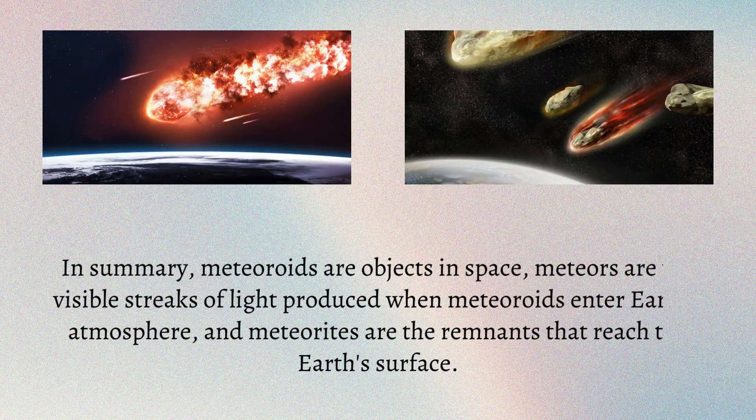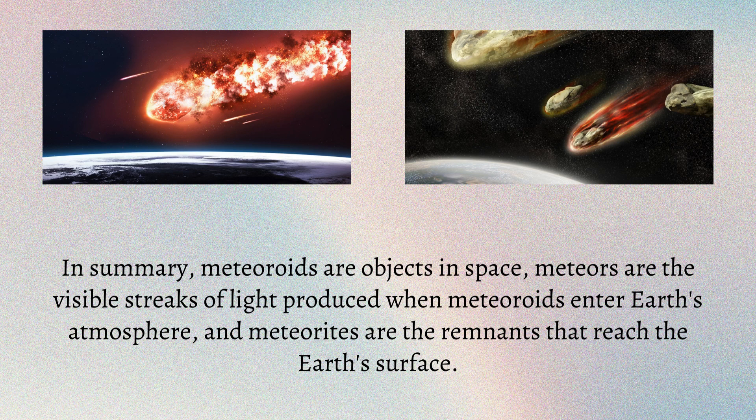In summary, meteoroids are objects in space, meteors are the visible streaks of light produced when meteoroids enter Earth's atmosphere, and meteorites are the remnants that reach the Earth's surface.